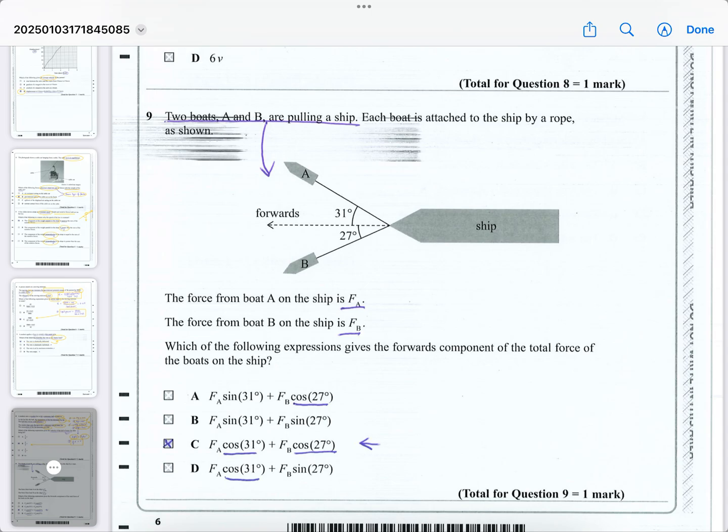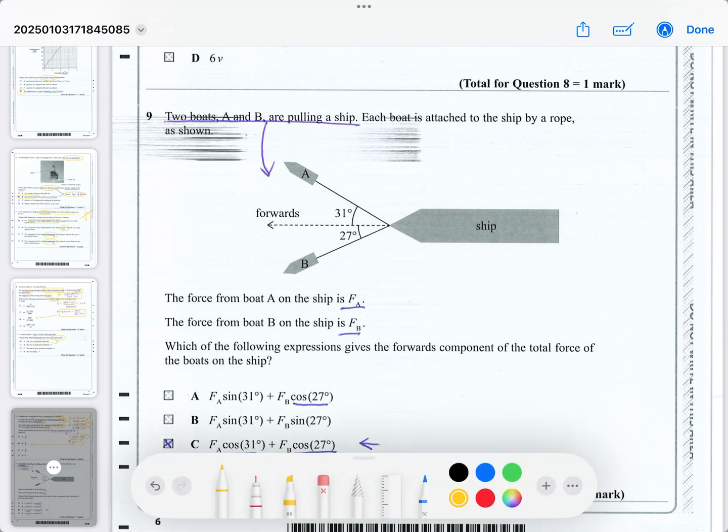Question 9 is about two boats pulling a ship. At the angles shown, the boats are pulling the ship by means of ropes as shown in the diagram. The force on A, you can count as Fa. And likewise, the force of boat B, we can call Fb. Now they've given us the angle to the x component or the forward component of the motion. And that's the direction that we're proposing that we're going to be thinking about. Which of the following expressions gives the forward component? So we want the forward component of both forces, of the total force, which would be Fa and Fb, pulling in the forward direction.